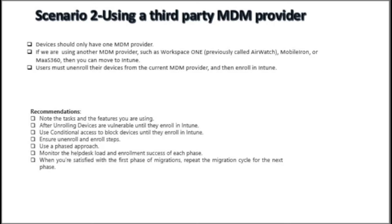If we are moving from an MDM or MAM provider to Intune, we should follow Microsoft's recommendations. We need to note the currently running tasks and features we are using — this gives us an idea of what to do and where to start in Intune. When devices are unenrolled, they are not receiving any policies, including protection policies, and are vulnerable until they enroll in Intune. We should use conditional access to block devices until they are enrolled in Intune, document the unenrollment and enrollment steps, and use a phased approach — starting with a small group of pilot users, then adding more groups until we reach full-scale deployment.